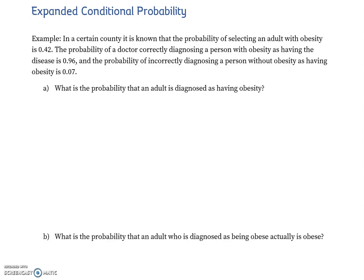We looked at conditional probabilities before, and we're going to expand on that idea with a slightly more complex example. In a certain county, the probability of selecting an adult with obesity is 0.42, or 42%. I'm going to use O with a positive superscript to denote that a person is obese, so P(O+) = 0.42.